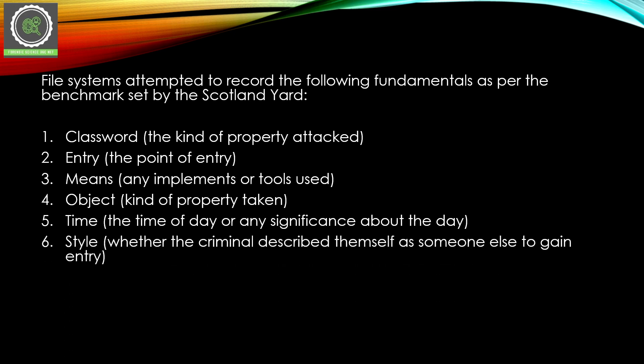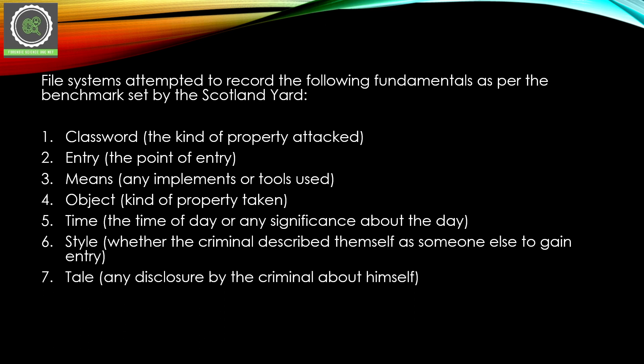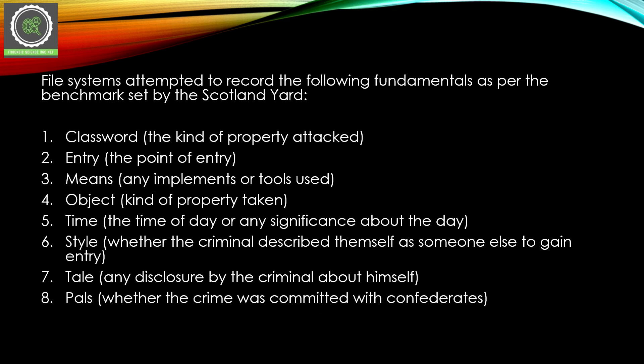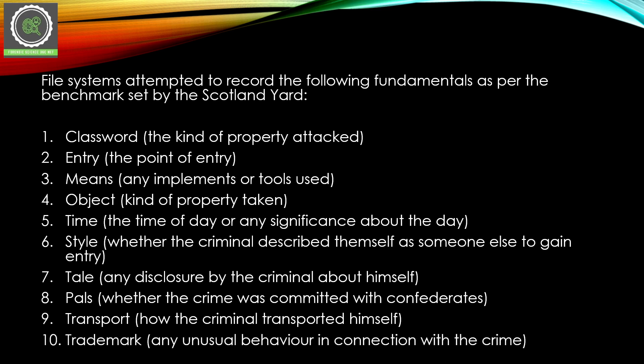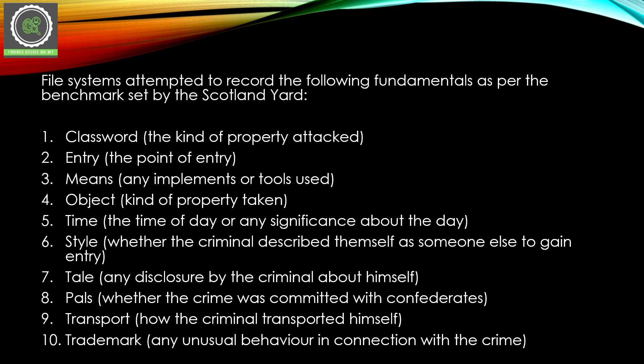Sixth is style — whether the criminal described themselves as someone else to gain entry, i.e., the style of entrance. Seventh is tale — any disclosure by the criminal about himself. Eighth is pales — whether the crime was committed with confederates. Ninth is transport — how the criminal transported himself to the crime scene. Tenth is thread mark — any unusual behavior in connection with the crime.